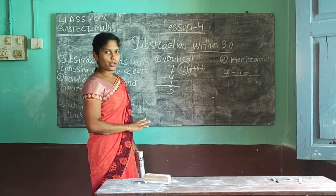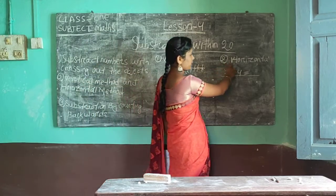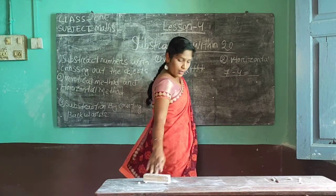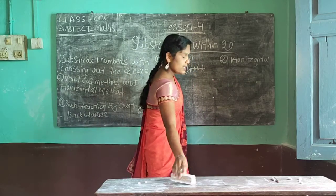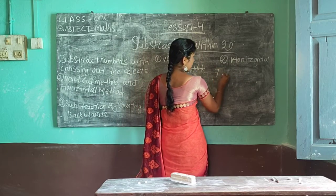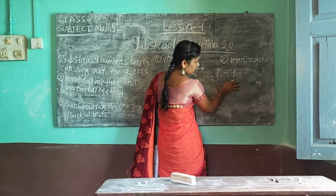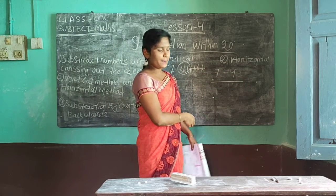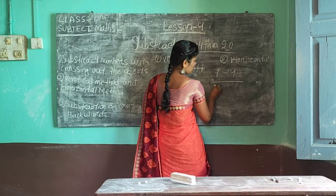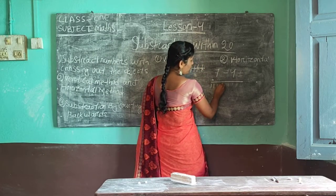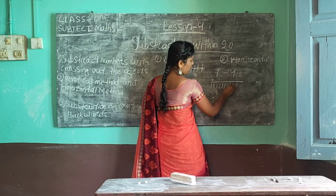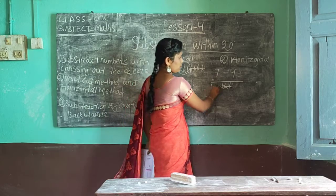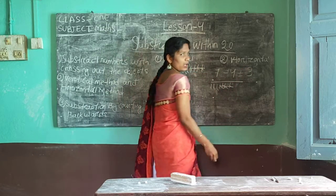Next, come to the horizontal method. What type of method is this? It uses a slanting line. See, 7 minus 4 — this is your slanting line, yes or no? This is your horizontal method. So, 7 minus 4: 7 chocolates is there — 1, 2, 3, 4, 5, 6, 7. Cut 4: 1, 2, 3, 4. How many left? 1, 2, 3. So, 3 is your answer.